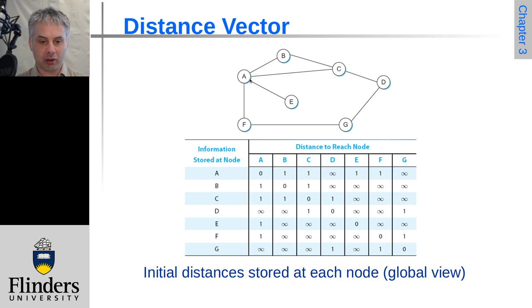Or where it has direct neighbors. So A has direct neighbors of B, C, E and F. So B, C, E and F in this case are given a cost of one. We're assuming that all of the links have a cost of one for each single hop. It doesn't know how to get to D and G, so it says it has an infinite cost to D and G.